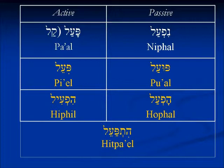Part of the reason we are looking at this concerning the Mem is that the highlighted binyanim — pi'al, pu'al, hif'il, hof'al, and hitpa'al — in the participle tense all begin with Mem. The participle tense is not used that frequently in Tanakh, but we are going to look at some examples where we see it. Comparing these first two examples, I hope, will explain several of these principles.